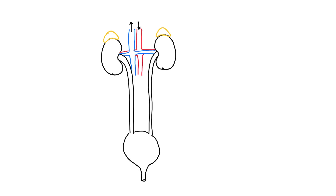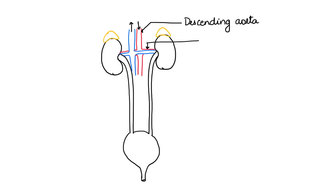The one in red is placed behind the one in blue, so when you are drawing, you place one behind the other. That is the descending aorta. The descending aorta branches and the branch enters into the kidney.